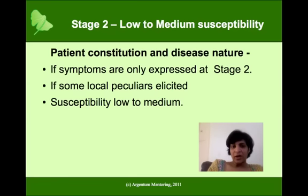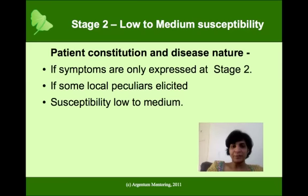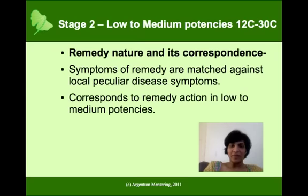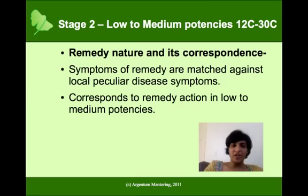At stage 2, what we are looking at are localized symptoms, but in this case if that person is expressing some sort of peculiar at a local level, we can call that a stage 2. So in this case, the susceptibility is not very low but there is a medium susceptibility because the person as an individual is expressing some sort of peculiars at a localized level. So at this stage you could give a low to medium potency because the symptoms will match at that particular potency and the remedy in the provings has created those sorts of localized peculiar symptoms. The potencies I'll look at are 12c to 30c.